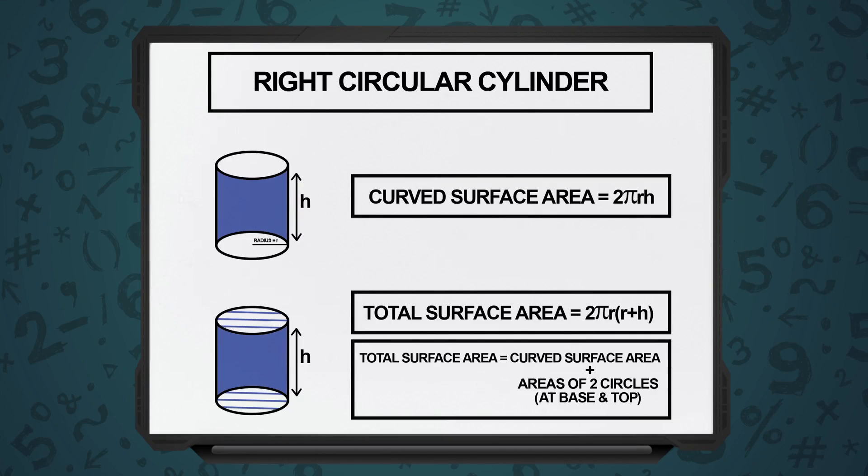So, for curved surface area of a right circular cylinder, the formula is 2 pi r h, where r is the radius of the base, h is the height, and pi is known.